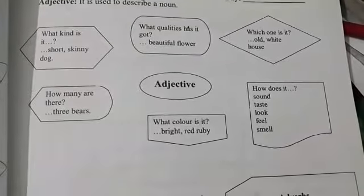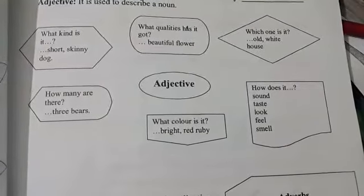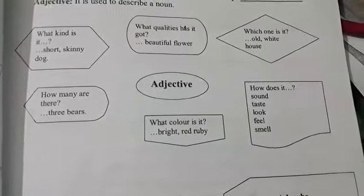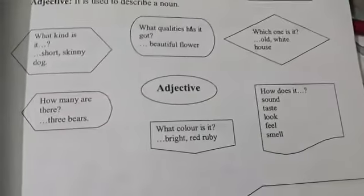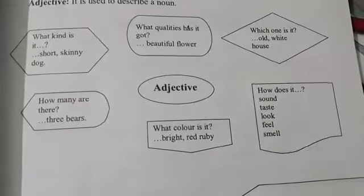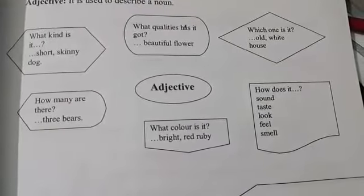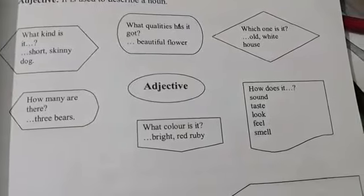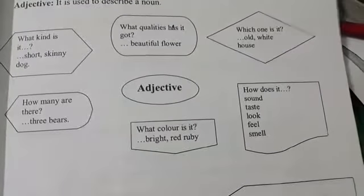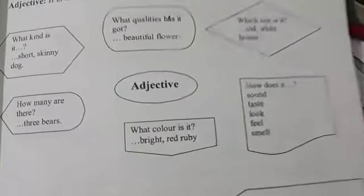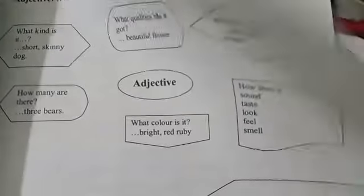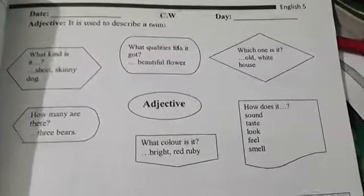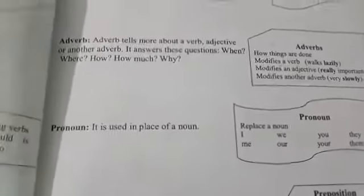How many are there? Three. Adjective tells numbers as well — it tells all the qualities: color, what color is it, brighter, ruby red. How does it sound, taste, look like, and feel and smell — these all come under adjective.